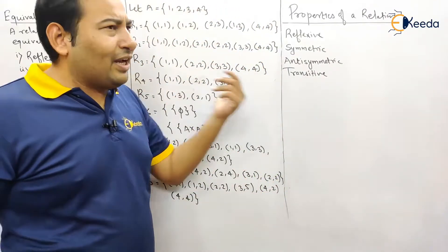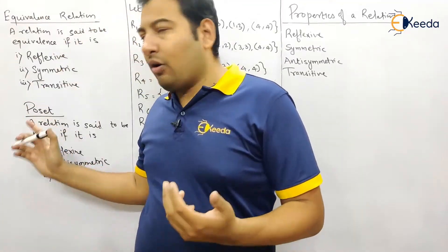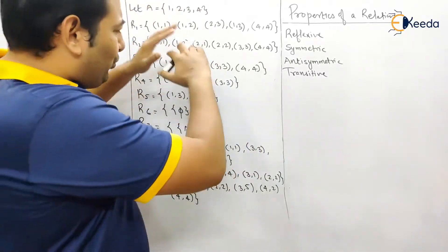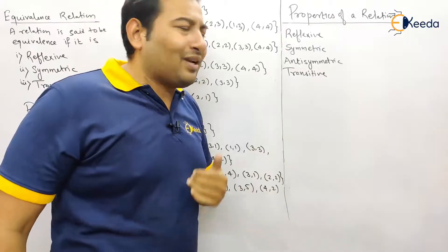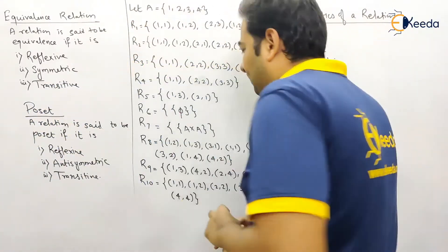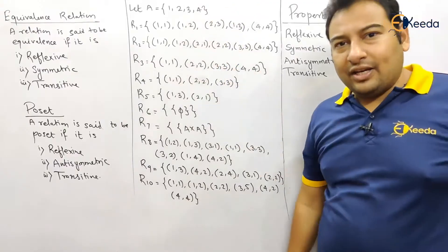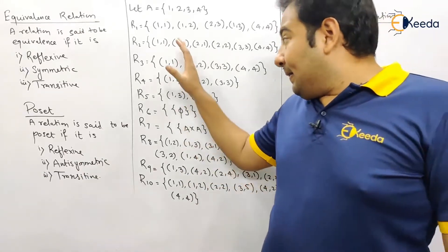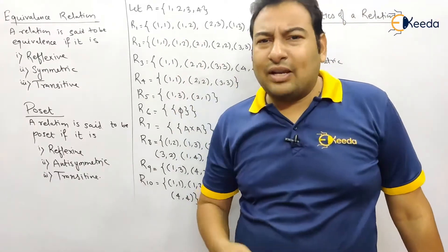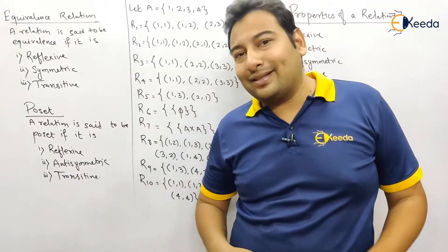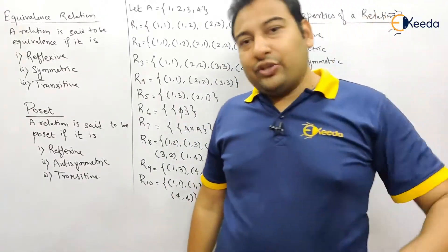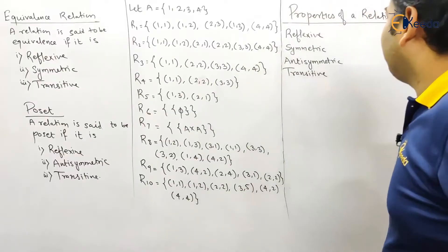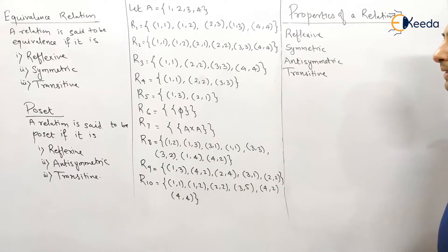In your exam — whether GATE, MCQ, or written — a relation will be given and you need to check whether it is equivalence or a poset. Let us start by checking which of the given relations are reflexive, symmetric, anti-symmetric, and transitive. Pause the video and try to solve all the problems yourself first.